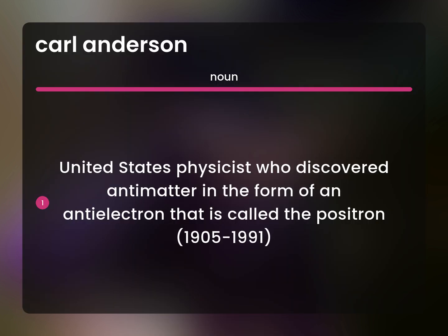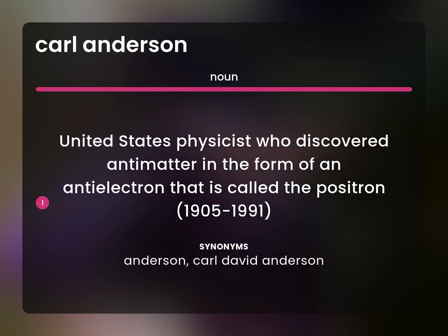Anderson, Carl David Anderson — United States physicist who discovered antimatter in the form of an antielectron, called the positron. 1905–1991.